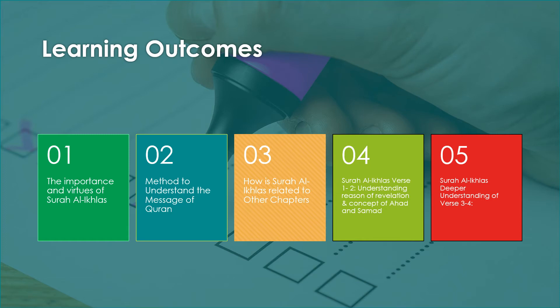Having completed section 1, we will now move to section 2 where the key focus will be to understand the message of the Quran, with emphasis on Tadabbur. This section is not directly related to Surah Ikhlas but generally talks about the methods we need to use before we approach it. This is more to do with the method we will be using in sections 3, 4, and 5.